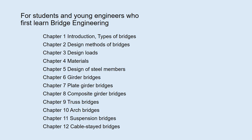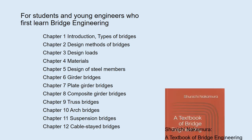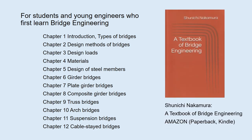Chapters 6 through 12 present structural forms and designs of plate girder bridge, composite bridge, truss bridge, arch bridge, suspension bridge, and cable-stayed bridge. My lectures are based on my textbook, which is available from Amazon in paperback and Kindle. This would help you understand my lectures.